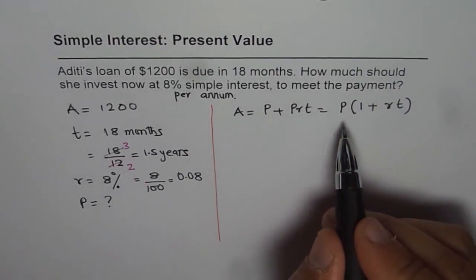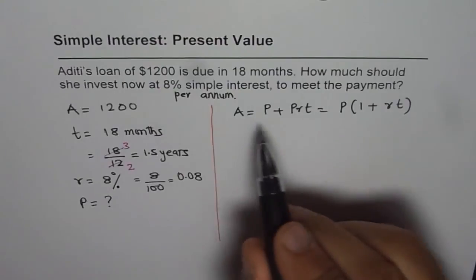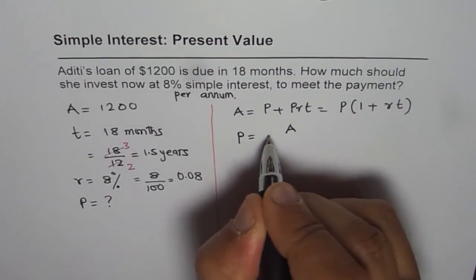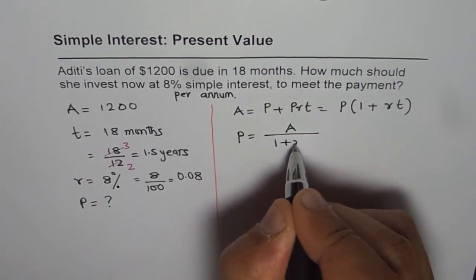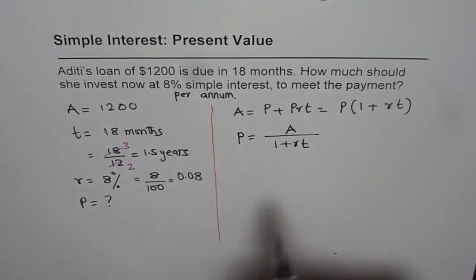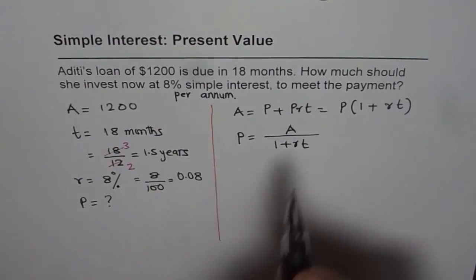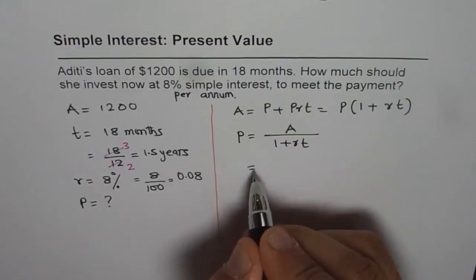Now we need to find principal and we know the amount. So we can rearrange the formula and we can write P equals A divided by (1 + R·T). Now we know A, we know time and the rate of interest. So substituting those values should give us the answer.